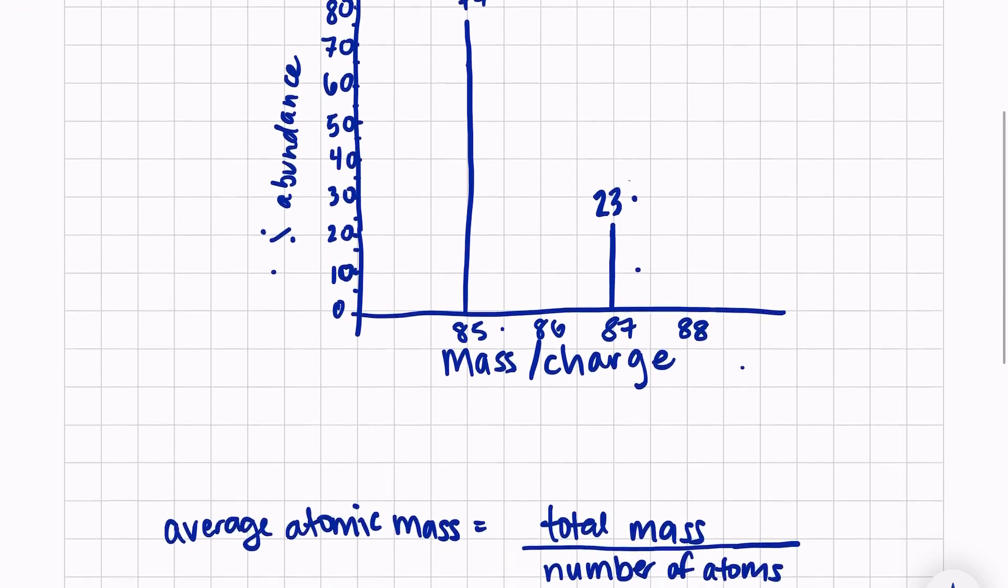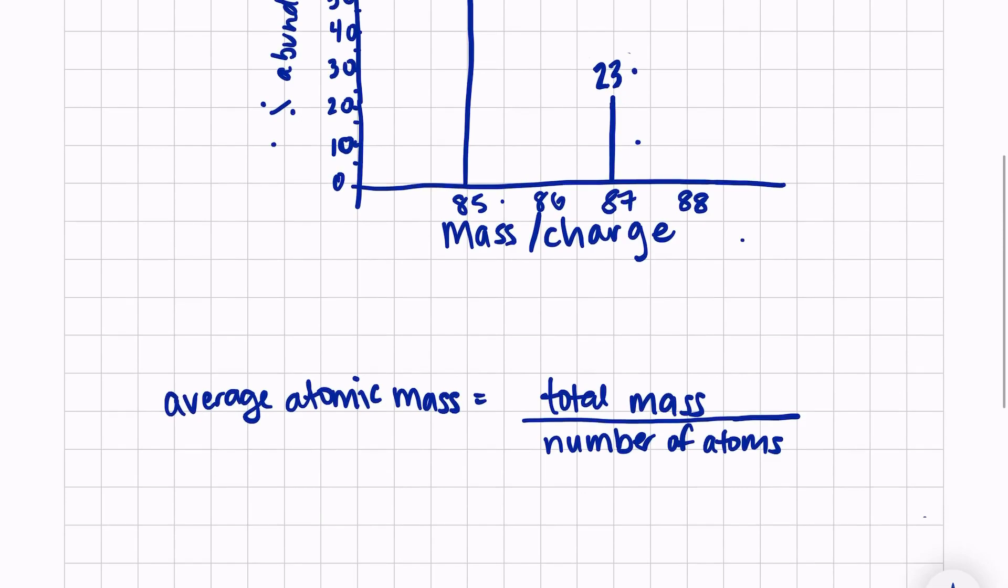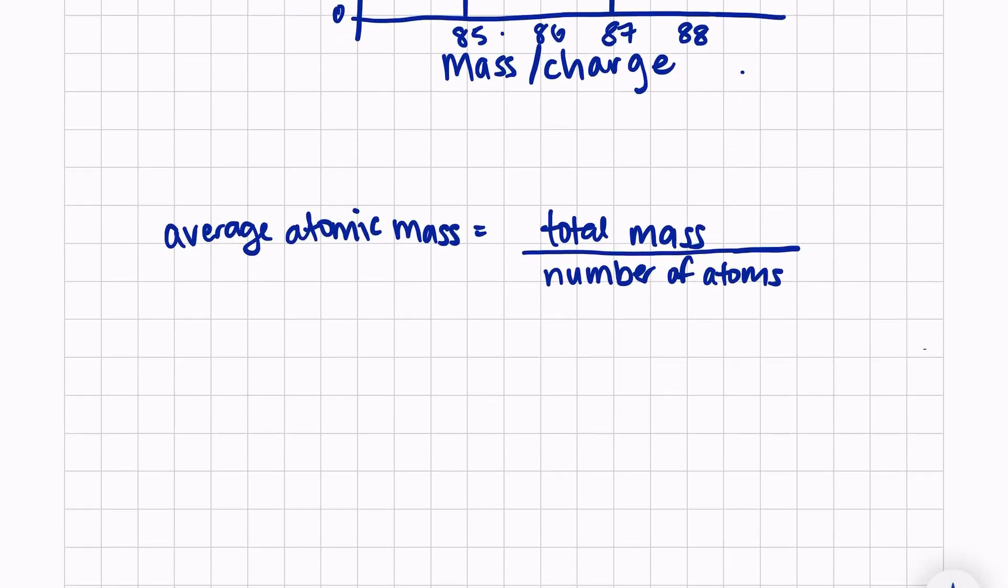The formula for average atomic mass is the total mass over the total number of atoms. Remember that for my total number of atoms, I can set it equal to 100 because we are working with percentages. This will just make our life easier.